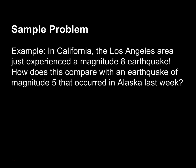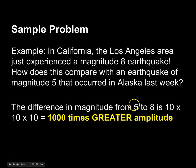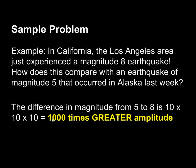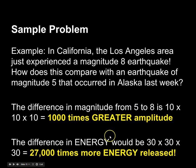Here's a sample problem for magnitude. If LA experienced a magnitude 8 earthquake, how does that compare with a magnitude 5 earthquake in Alaska? Going from 5 to 8 is three steps — 8 to 7 to 6 to 5 — so it's 10 times 10 times 10. That means the LA earthquake was 1,000 times greater amplitude. It's not 30 times — it's 10 times 10 times 10. For energy, it's 30 times 30 times 30, so 27,000 times more energy for a magnitude 8 versus a 5.